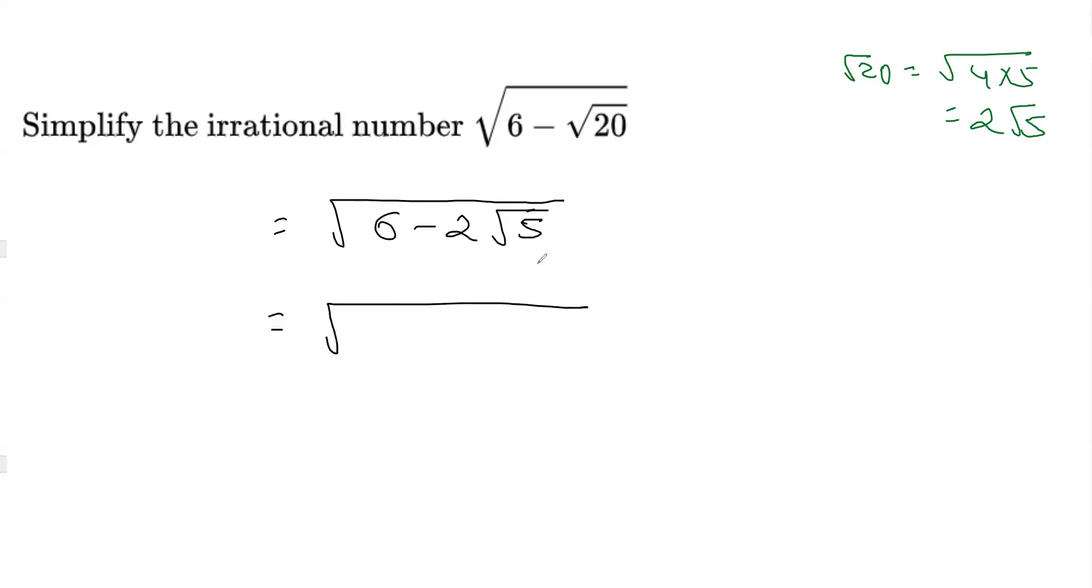Since we know there is a root 5, I'm going to split 6 as 5 plus 1, so we have 5 plus 1 minus 2 root 5.